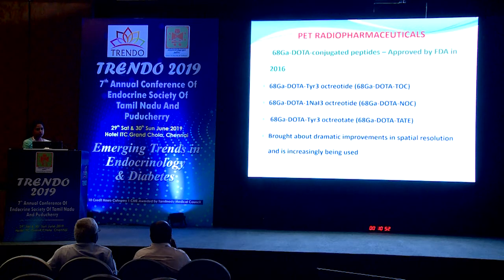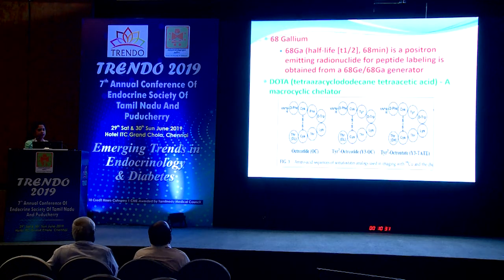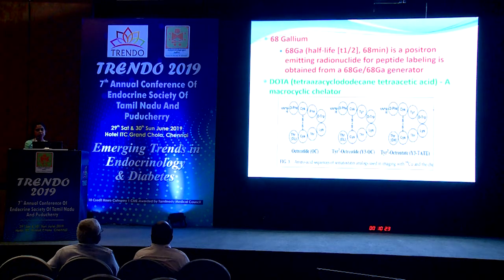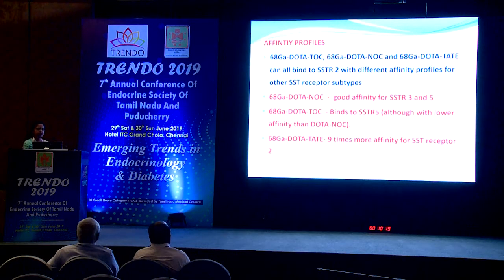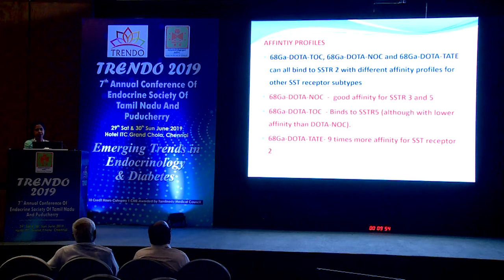Gallium-68 is a positron-emitting radionuclide produced with a Germanium-Gallium generator in-house. DOTA is the macrocyclic chelating agent, while TOC, NOC, and TATE are octreotide analogs with slight amino acid modifications that alter their affinity for somatostatin receptors. All three can bind receptor type 2 with good affinity. DOTA-NOC has good affinity for receptor types 3 and 5; DOTA-TATE has nine times more affinity for receptor type 2, making it preferred for NET therapy.